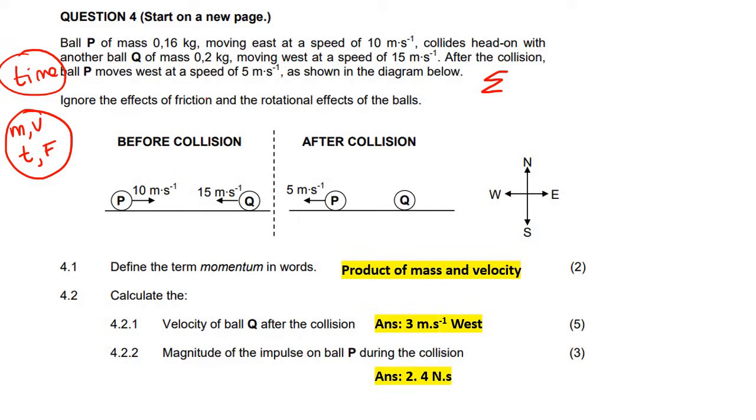Sum of all the momentum initial before the crash equals to the sum of all the momentum after the crash. That's the conservation of linear momentum. Choose a direction as positive. I'm going to choose to the right or east as positive, but you can choose the other way. Now we fill in the momentum of P initial plus the momentum of Q initial equals to the momentum of P final plus the momentum of Q final.